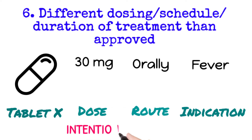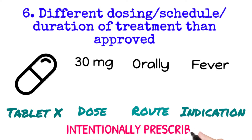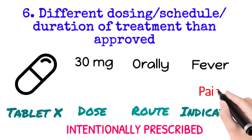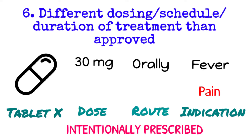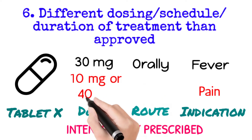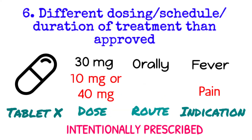However, the doctor intentionally prescribed tablet X for the treatment of pain. Or in some instances, the doctor prescribed tablet X for the treatment of fever only, but the prescribed dose is less than or more than the approved dose of tablet X. This is called different dosing, schedule, or duration of treatment than approved, and such a scenario is treated as off-label use.